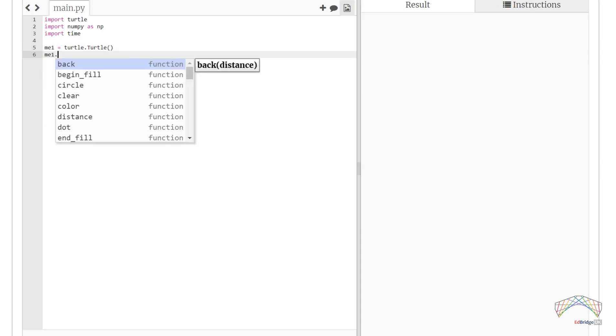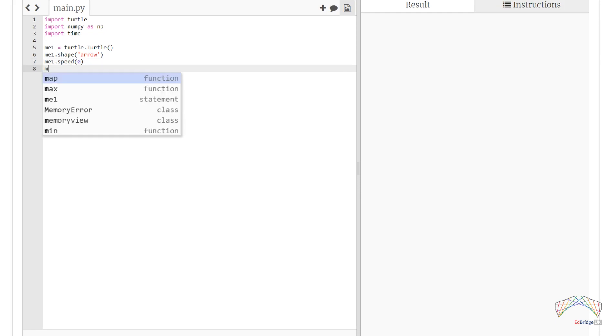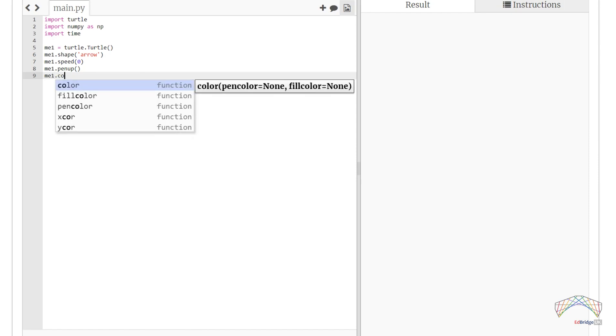After the turtle me1 is spawned, we set the turtle's shape to arrow, or you can use turtle if you like. Set the speed to 0, which means instant, because we don't really want to watch a turtle race, which is way too slow. And also lift the pen up to prevent from drawing too early. And set color to red.